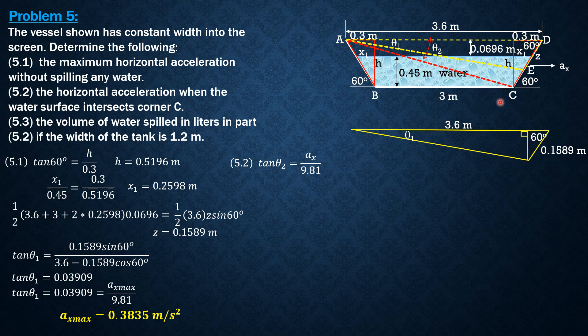3.6 minus 0.3. It is obvious in the figure. So tangent of theta 2 equals aₓ over g, which is also equal to h which is 0.5196 over this distance which is 3.6 minus 0.3, or 3.3. So we can compute aₓ equal to 1.545 meters per second squared.